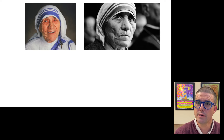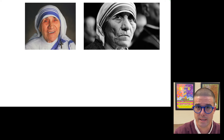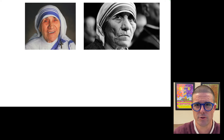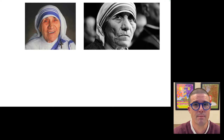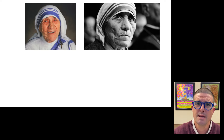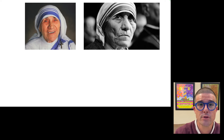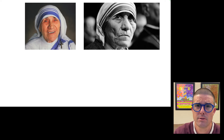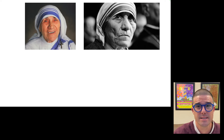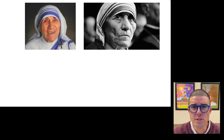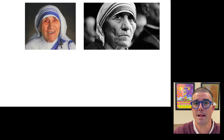A second portrait communicates some of the same things about Mother Teresa — once again she is in her old age and in her habit. But the portrait has a very different vibe. It shows a different side of Mother Teresa, namely the indignance she felt over the conditions of the Calcutta slums and the structures that caused those conditions to exist in the first place. This is indicated both by her expression and by the portrait being in black and white.